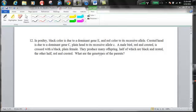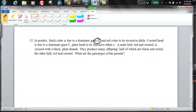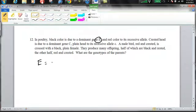In poultry, black color is due to a dominant gene E. And red color is its recessive allele. Now this is a little bit odd here. We've got an E here for this particular instance. Let's write down that. Capital E means black, and lowercase e means red.